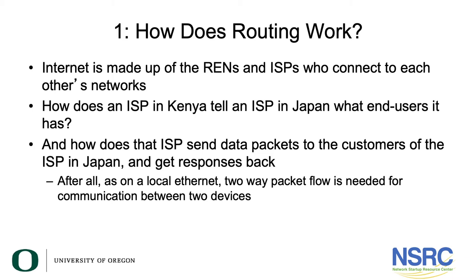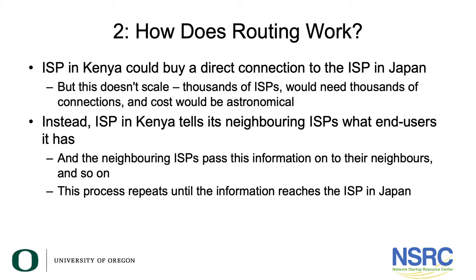After all, as on a local Ethernet, two-way packet flow is needed for communication between two devices. The ISP in Kenya could buy a direct connection to the ISP in Japan, but this does not scale as thousands of ISPs would need thousands of connections and that cost would be astronomical.